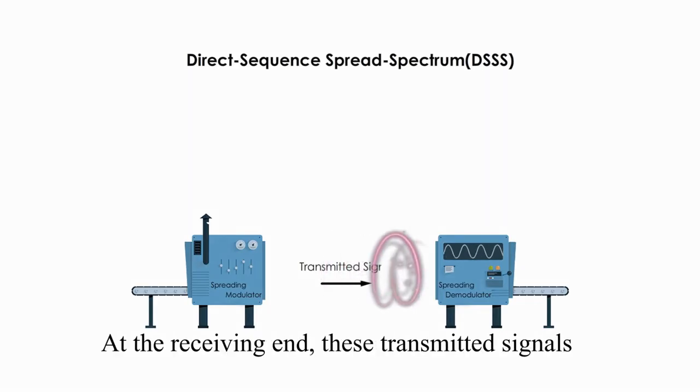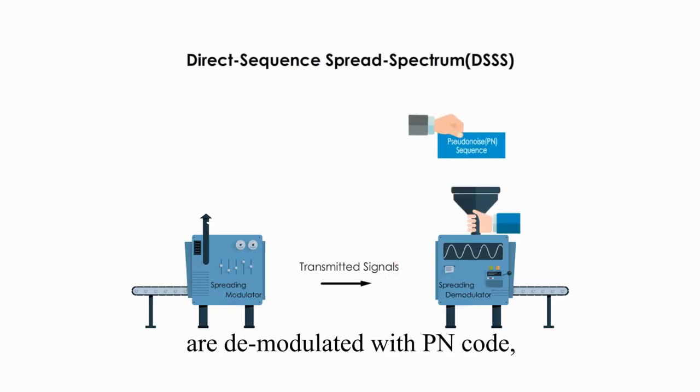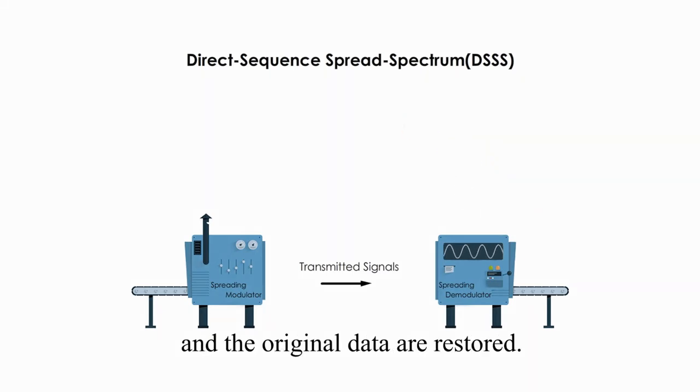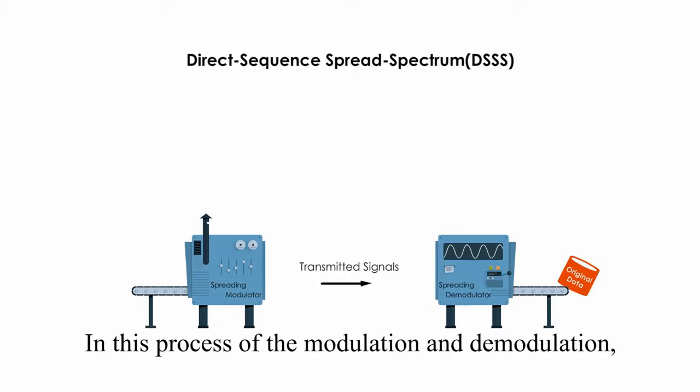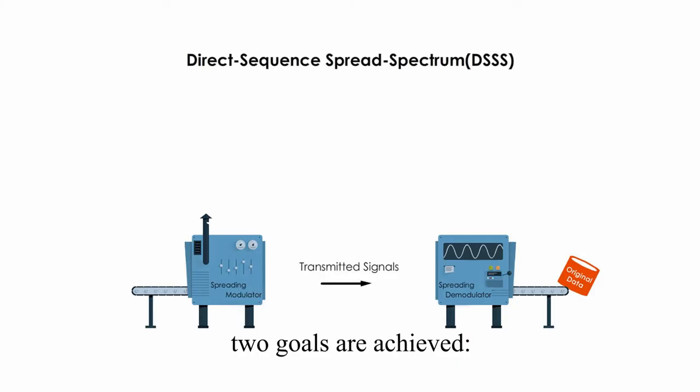At the receiving end, these transmitted signals are demodulated with PN code and the original data are restored. In the process of modulation and demodulation, two goals are achieved.